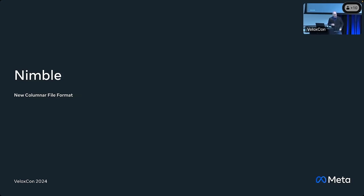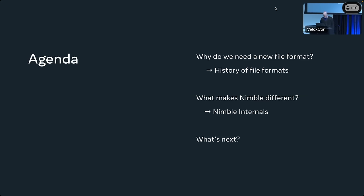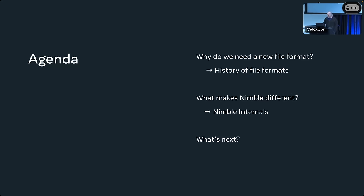We had some mentions before in the last day and a half about a new file format that we are working on at Meta. We call it Nimble. Today we're going to talk about why we felt there is a need for a new file format. In order to understand that, we're going to have a short history lesson about columnar file formats. Then we're going to talk about Nimble, what makes it different, how we solve the problems we saw, and what's next for Nimble.